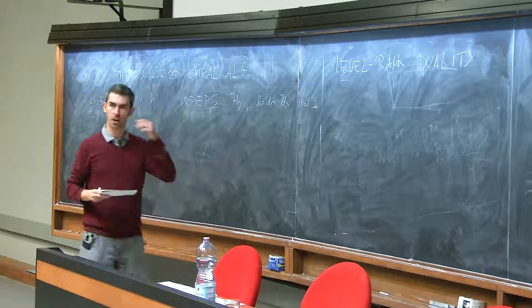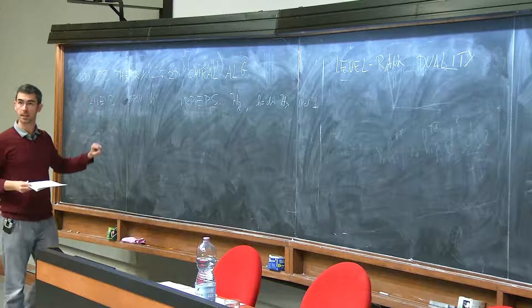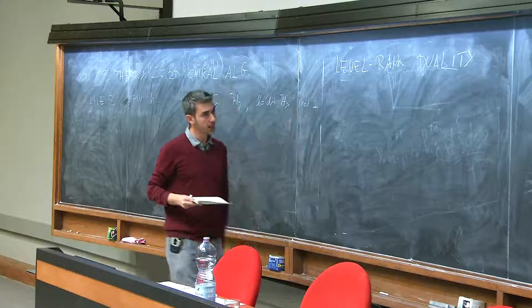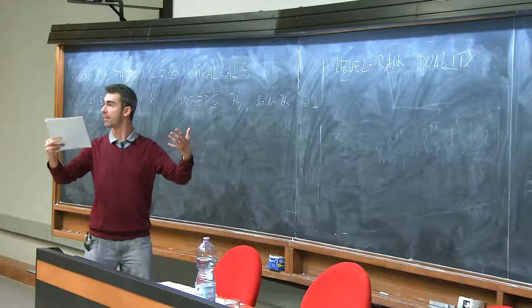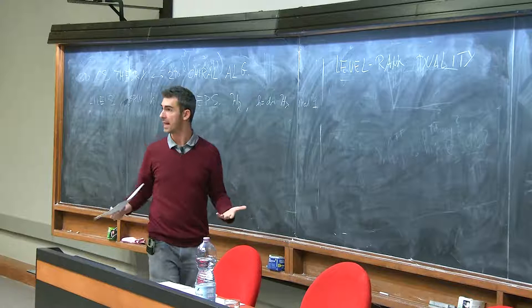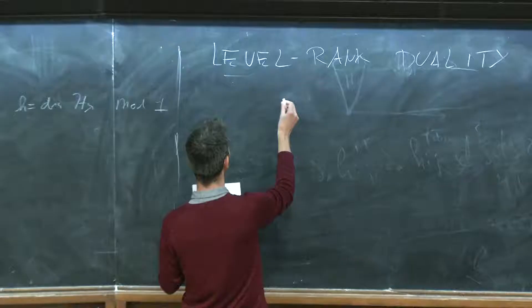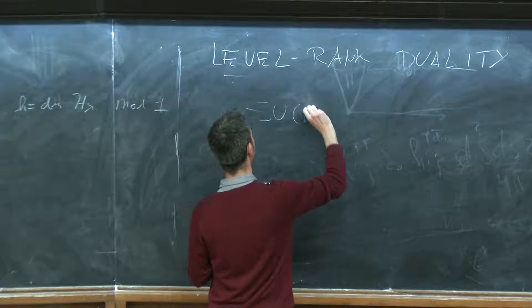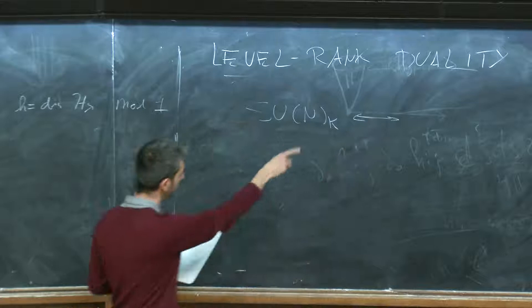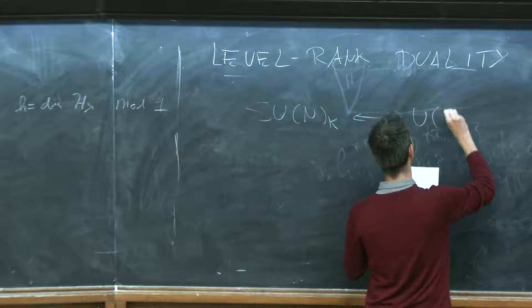In our definition of Chern-Simons theory, we start with a Lagrangian definition. We start with some gauge group G and some level K. But what might happen is that we start with two descriptions that look different — different gauge group, different level — but nevertheless the quantum theory is the same. And level-rank duality is one example of this phenomenon. In particular, it turns out that SU(N) at level K is the same theory as U(K) at level minus N.